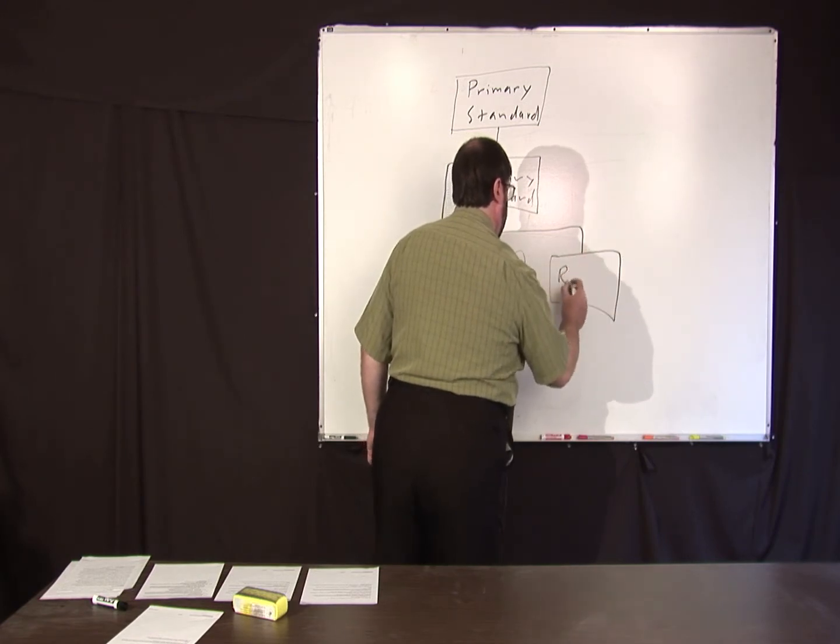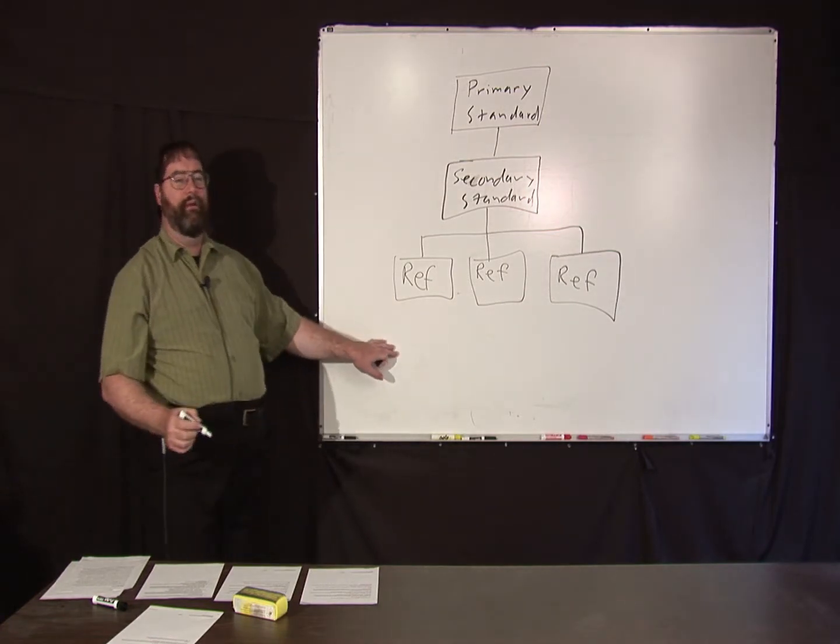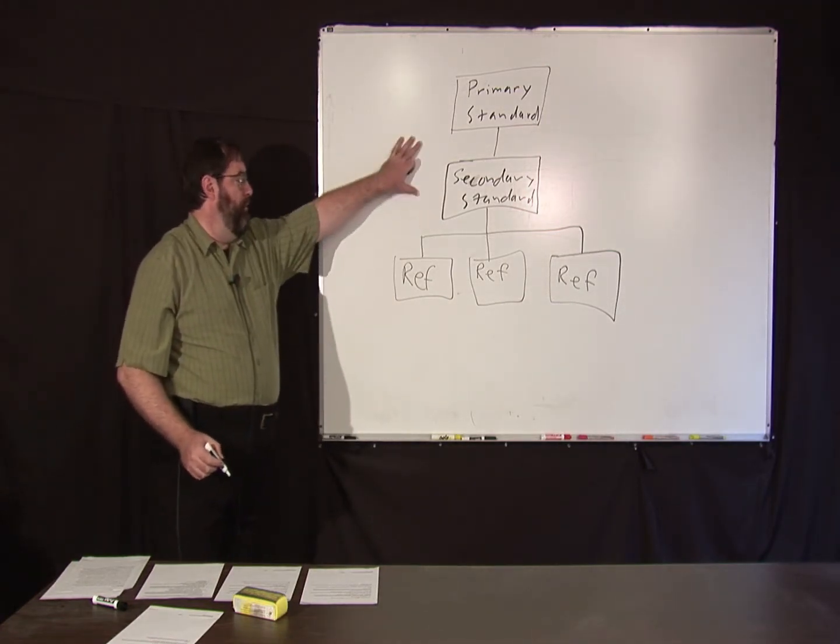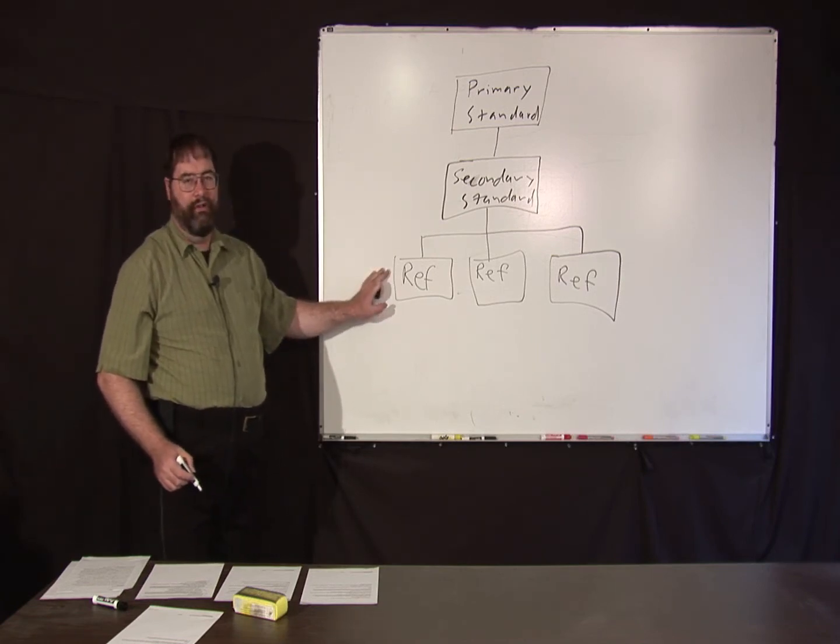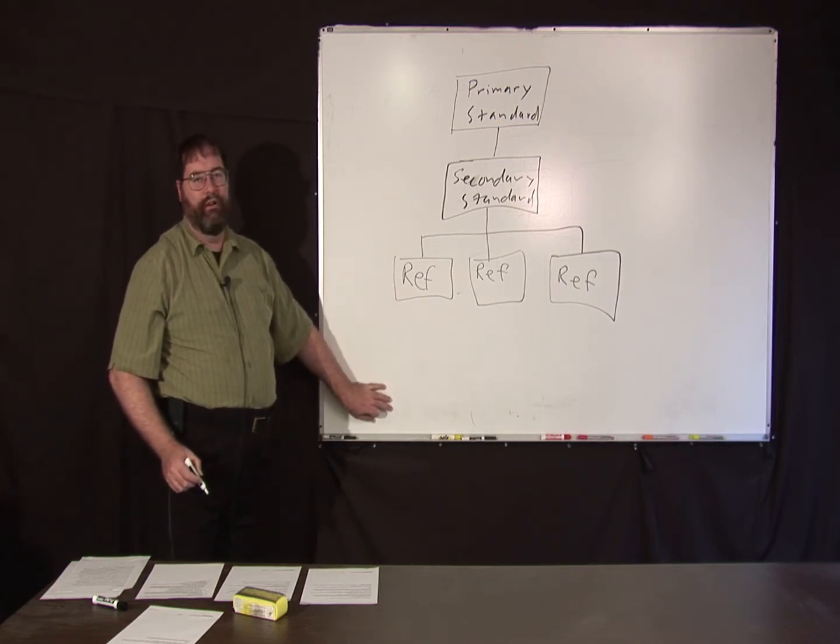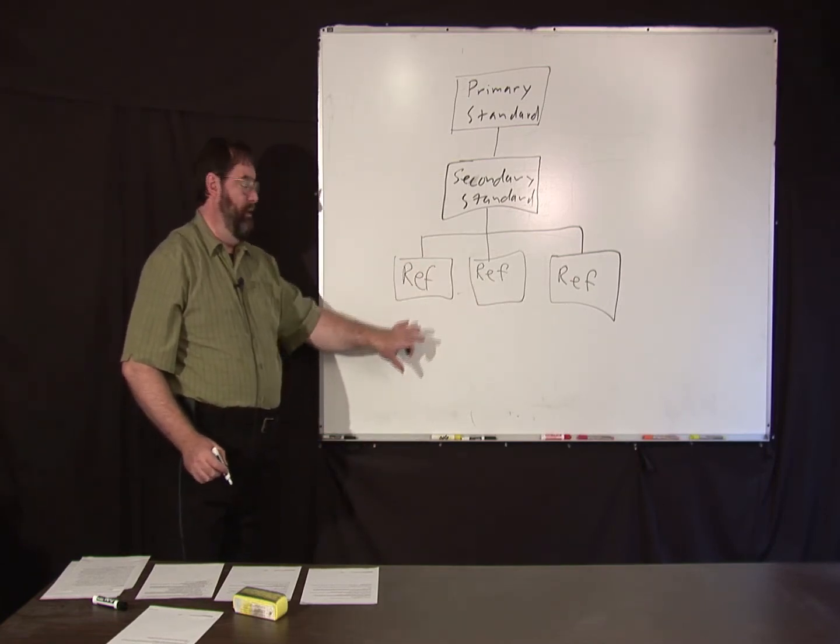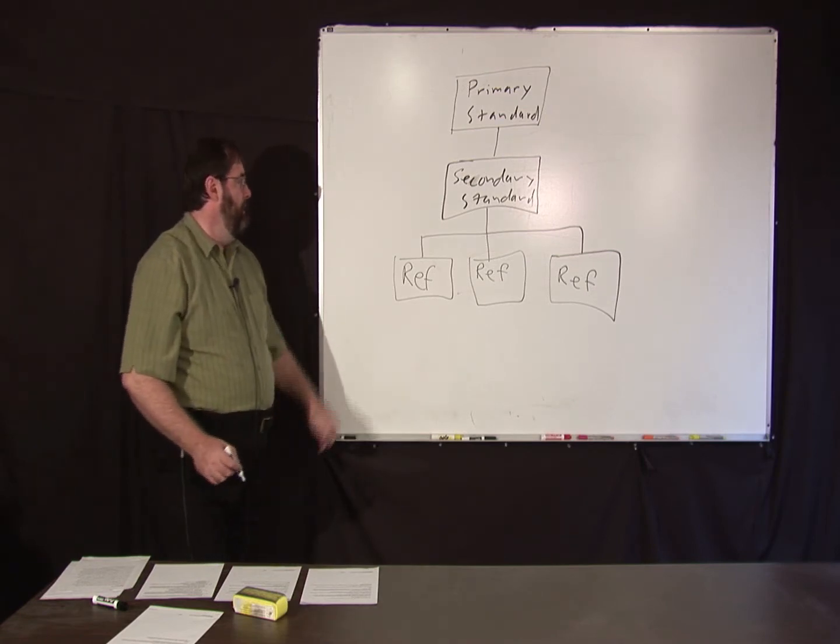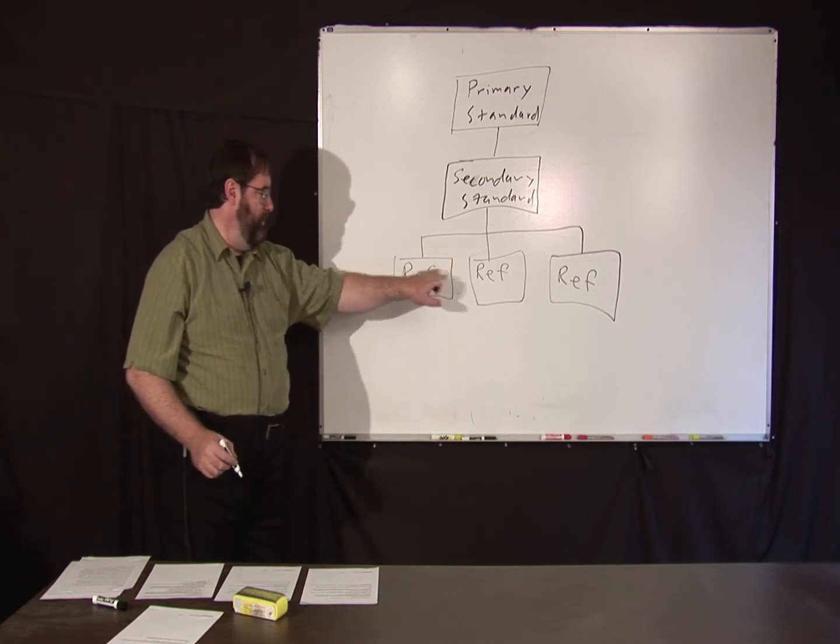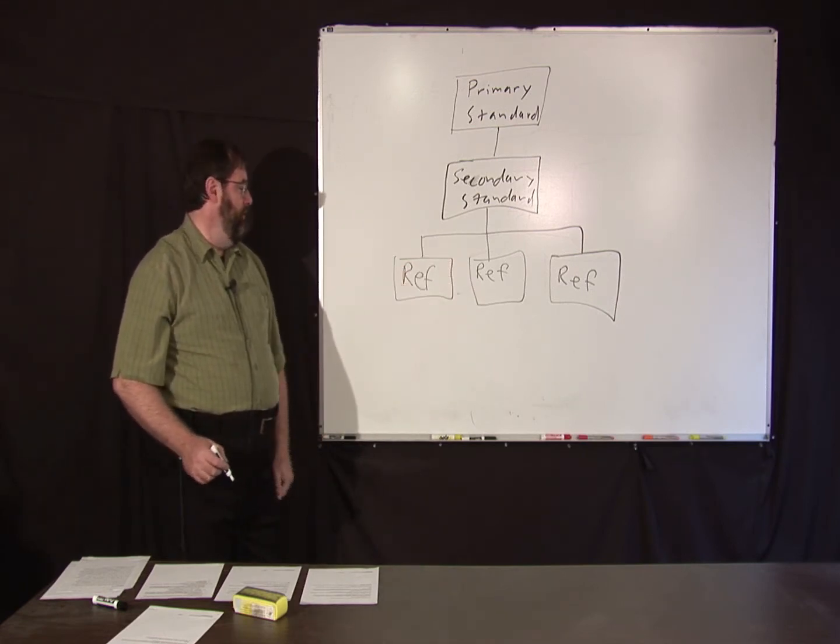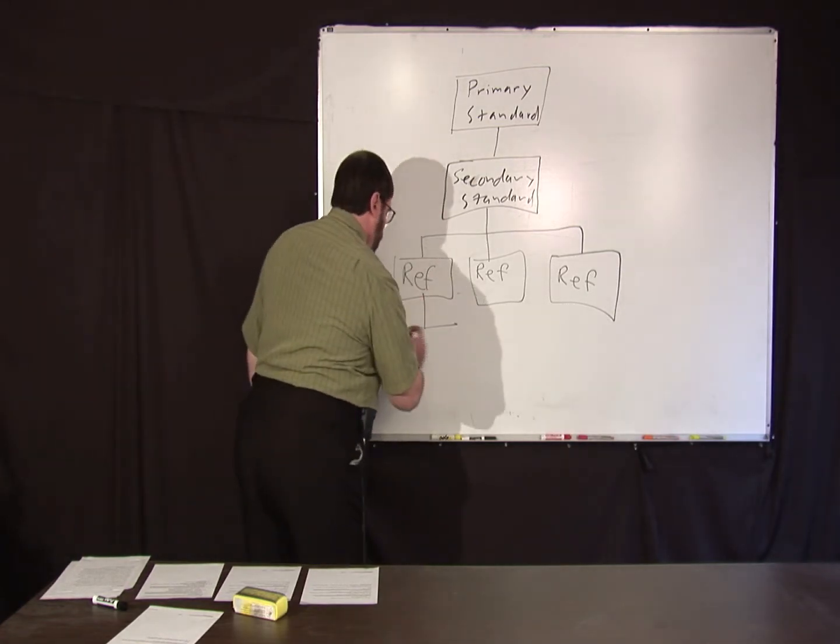And then there's usually another level below this. Or maybe this might also be used to calibrate other reference standards. For instance, this might be a primary lab at a company if it's big enough. And these could be secondary calibration labs. And you could have tertiary labs as well. So you might have a lab and then regional labs and then local labs. Or this could be a country's primary and these are companies and then they use these to calibrate other standards. And below this is something called a working standard.